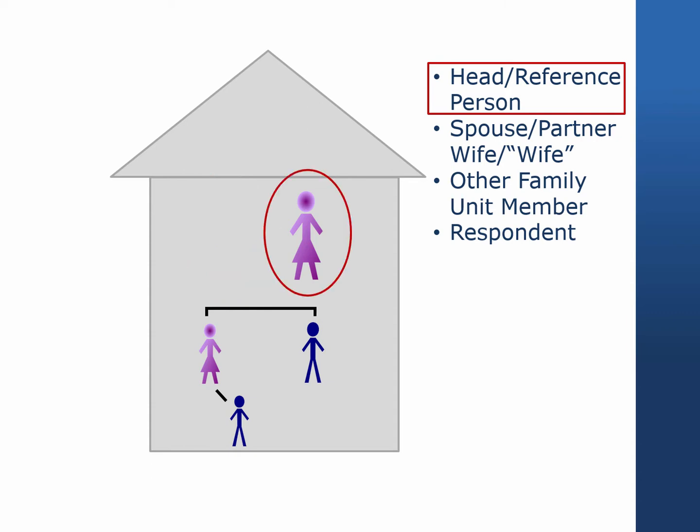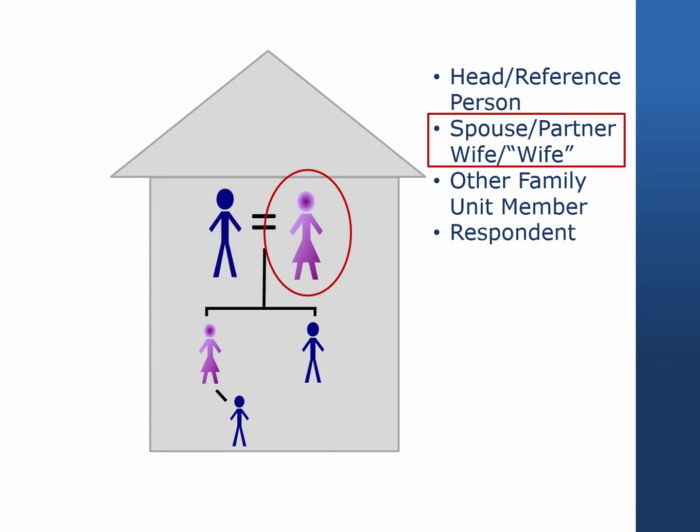In single parent and same-sex families, the reference person may be male or female. For each family unit, the person designated as reference person may change over time as the family composition changes. Parallel information is now collected on household reference persons and their spouse partners, making the designation of reference person less central to the study design.